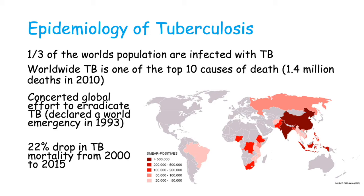In terms of the epidemiology of tuberculosis, it is estimated that one-third of the world's total population are infected with TB. Worldwide, TB is one of the top 10 causes of death, causing around 1.4 million deaths in 2010. There has been a concerted global effort to eradicate TB since it was declared a world emergency in 1993. While this has been showing some positive results, like a 22% drop in TB mortality from 2000 to 2015, TB is still a major burden on worldwide health. On the map, we can see the countries where TB is mainly concentrated, with China and India as the main areas of infection.